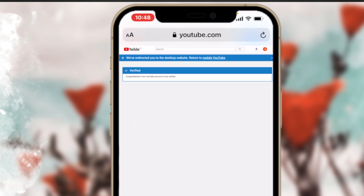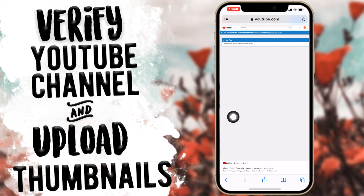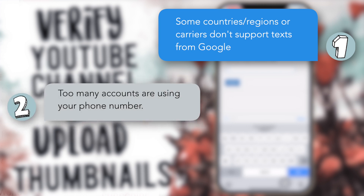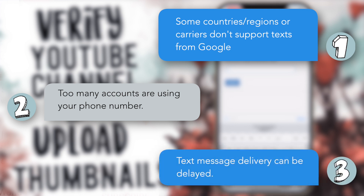Click submit again and after that you're going to be verified — it's really that easy. If some people aren't getting a verification code, possible reasons include: some countries, regions, or carriers don't support texts from Google; you have too many accounts using your phone number; or text message delivery can just be delayed, so wait a bit and it might come through.